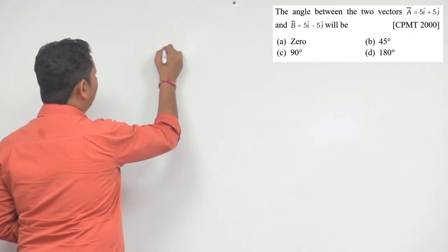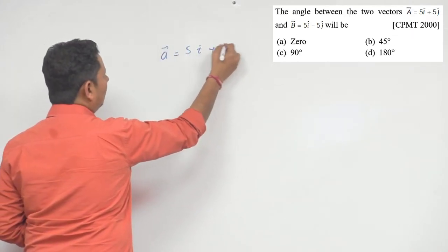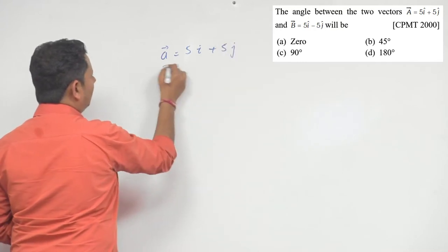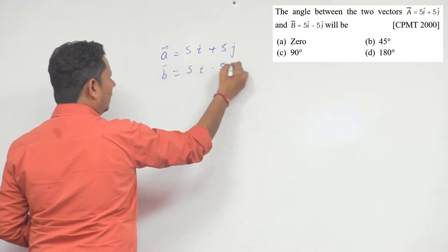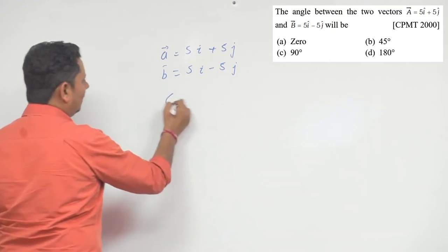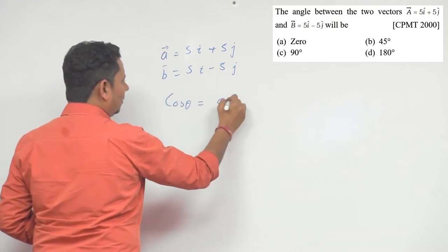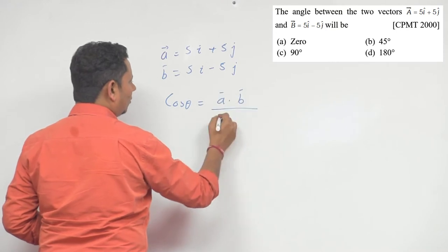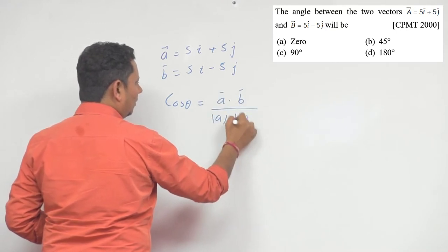We have two vectors: a = 5i cap plus 5j cap and b = 5i cap minus 5j cap. To find the angle between them, cos theta = a dot b divided by the product of their magnitudes.